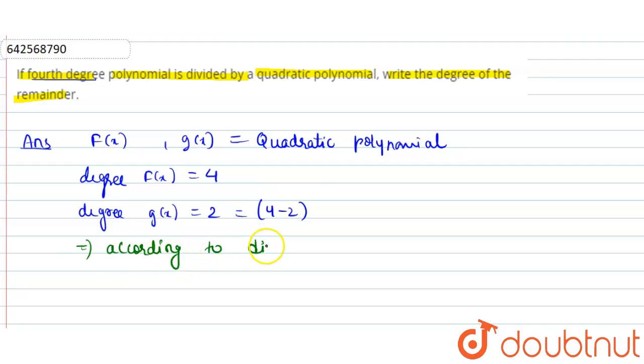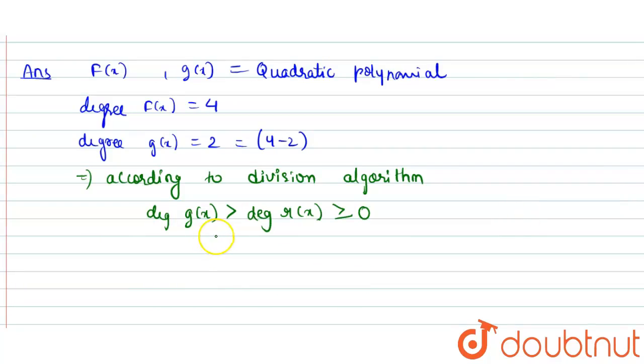the degree of g of x, that is the divisor, should be greater than the degree of the remainder, that is r of x, and degree of r of x should be greater than or equal to 0. So this is the condition in the division algorithm. Here the degree of g of x is 2.